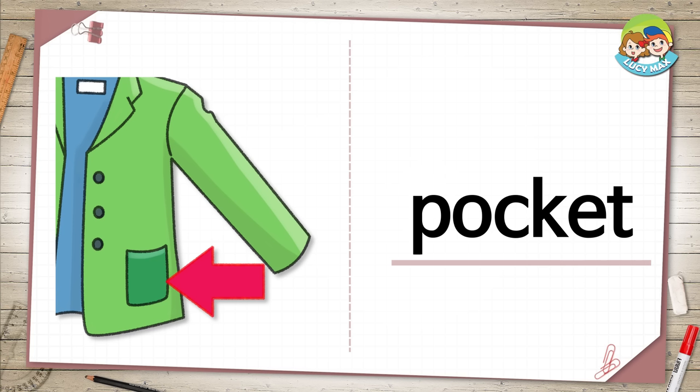Pocket. This is a place on our clothes where we can put things. The arrow in the picture is pointing to the pocket. What is in your pocket?